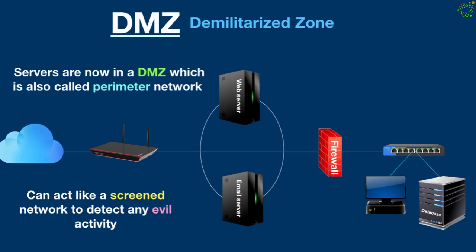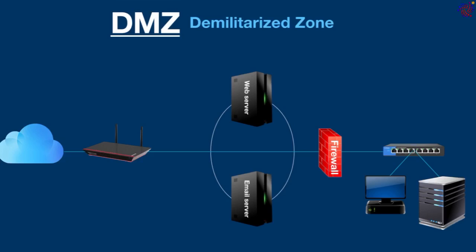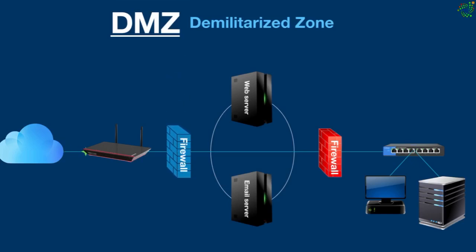So the whole idea behind DMZ is it separates a network into two parts by taking devices from inside the firewall and placing them outside the firewall. As you can see, this DMZ setup is using only one firewall. But for a more secure DMZ, you can deploy two firewalls. An additional firewall will be put in front of the DMZ. This additional firewall adds an extra layer of security and makes sure only legitimate traffic accesses the DMZ. As a result, the DMZ makes it more difficult for a hacker to gain access to an organization's private network because they would have to go through two different firewalls to get into the internal network.